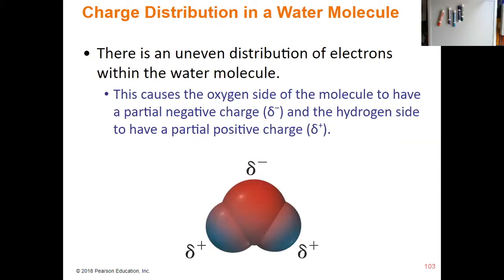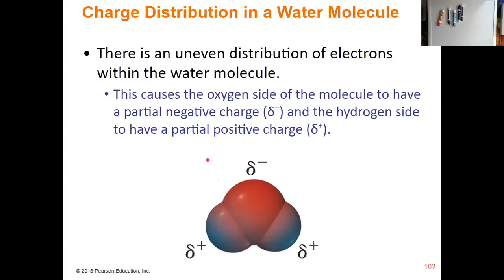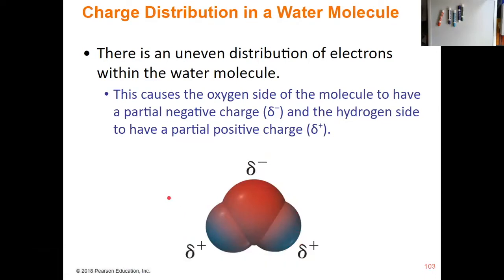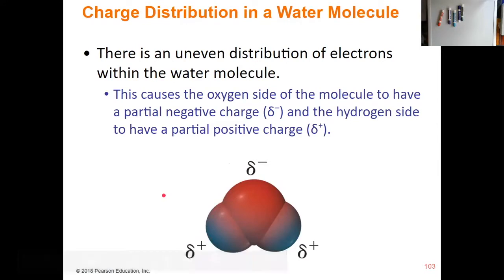If we look at the charge distribution in a water molecule, that's going to help us see how that pulling apart happens. If you remember from your biology classes and what we talked about earlier in the semester, this is a space-filling model of a water molecule. The larger middle portion is your oxygen, and the smaller bluish portions are your hydrogens. The oxygen has a partial negative charge on it, and each of the hydrogens has a partial positive charge, because oxygen is so much more electronegative than hydrogen — it pulls all the electrons in the molecule towards itself.